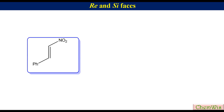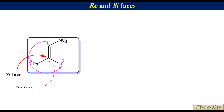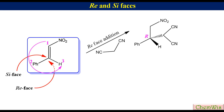For an alkene capable of undergoing Michael addition, the reaction occurs at the beta carbon, which is prochiral. Adding the missing hydrogen at the beta carbon and labeling the three groups by priority as 1, 2, and 3, then drawing an arrow from 1 to 2 to 3: since the direction is anti-clockwise, the top face is the Si face and the bottom face is the Re face. Addition of a nucleophile such as malononitrile from the Re face gives the R enantiomer, while addition from the Si face gives the S enantiomer.